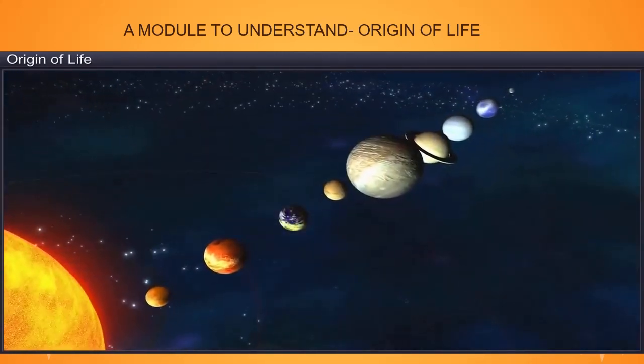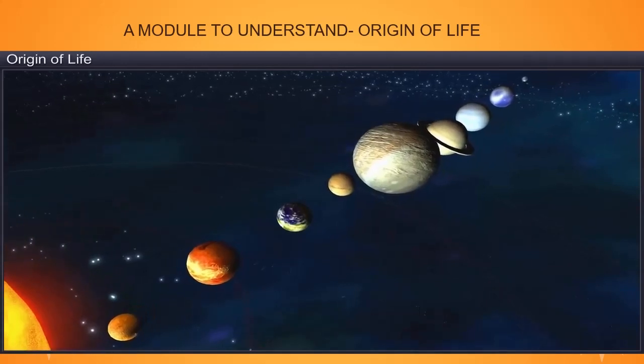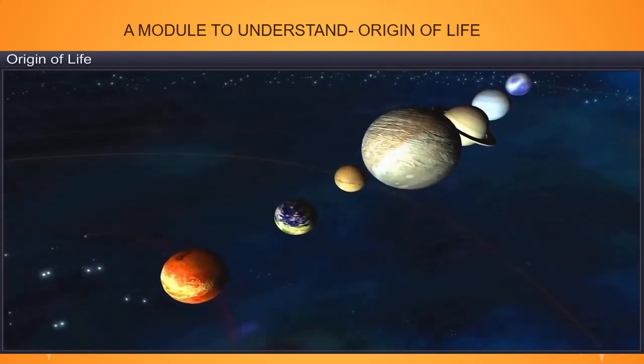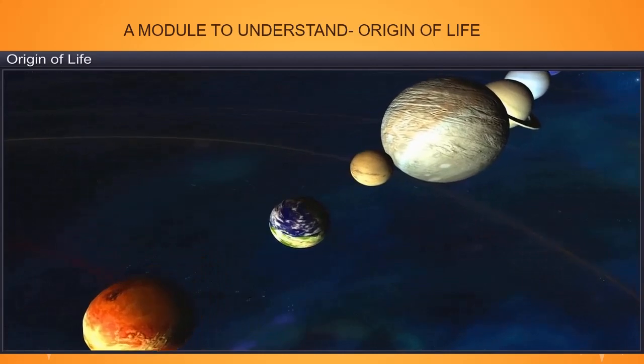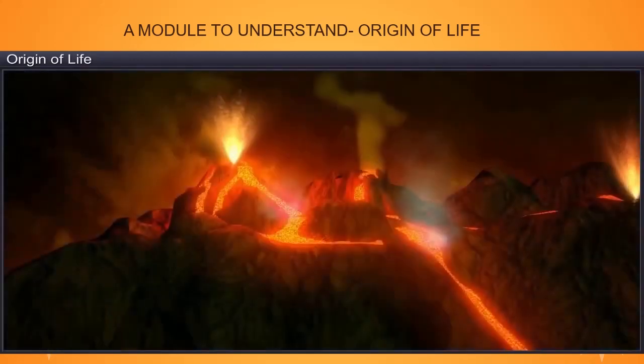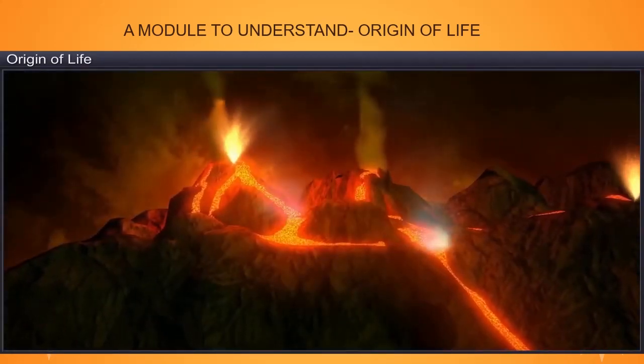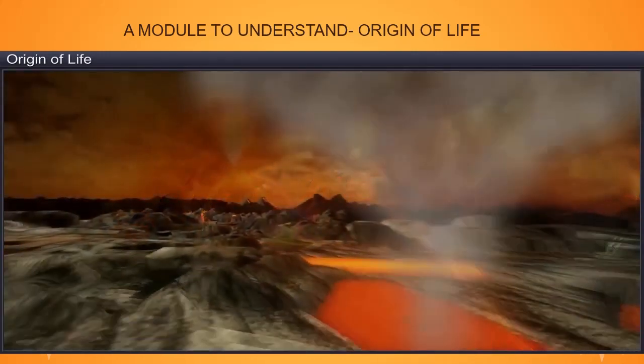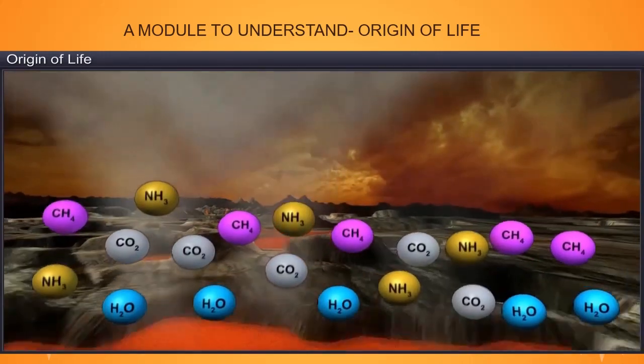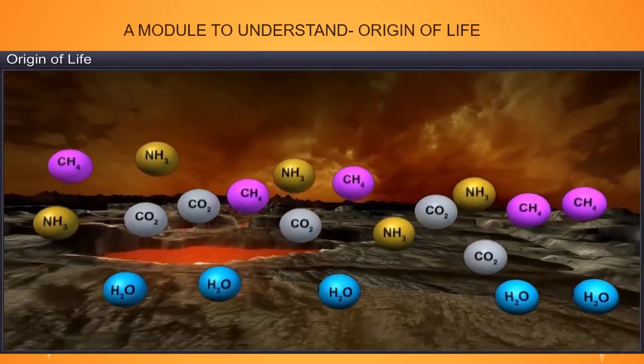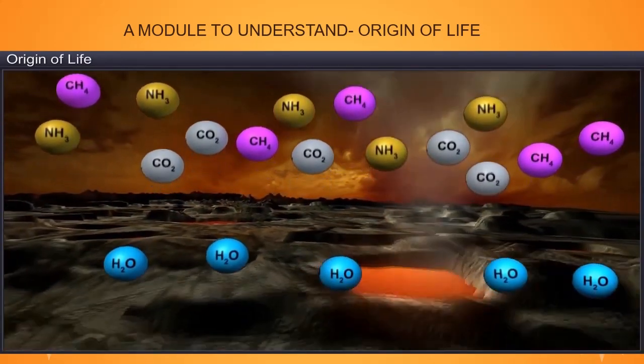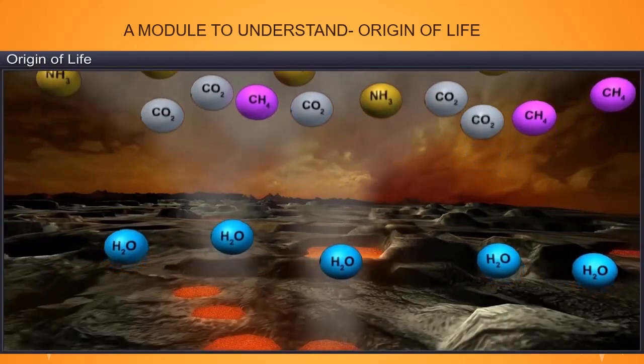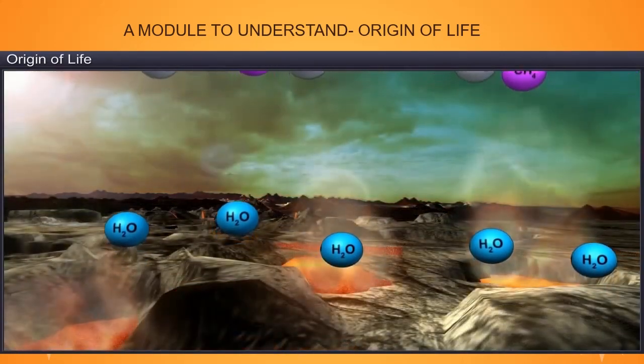One of the galaxies known to us is the Milky Way, which contains the solar system and the earth is one of the planets in the system. At the time of its formation, there was no atmosphere on the earth. Its surface was covered by water vapor, methane, carbon dioxide and ammonia released from the molten mass.